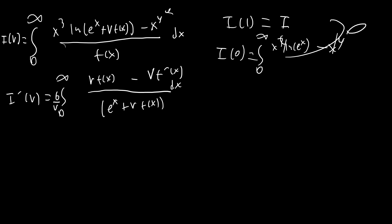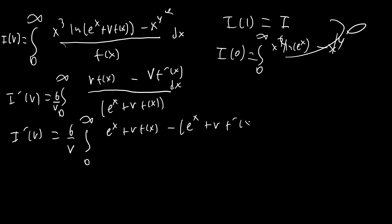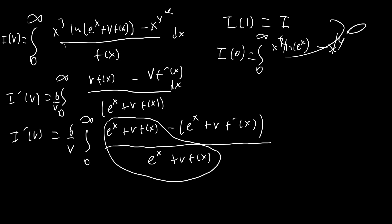e to the x has similar properties to f(x): when we differentiate f(x) we lose one term, but when we differentiate e to the x we get the exact same expression. So we're going to add and subtract e to the x on the top. What that's going to look like is I'(v) equals 6 over v times the integral from 0 to infinity of (e^x + v·f(x)) minus (e^x + v·f'(x)), all over (e^x + v·f(x)). The first part is just 1 since it cancels perfectly, and the second part — notice that the derivative of e^x + v·f(x) is just e^x + v·f'(x), so we can integrate using the natural log.